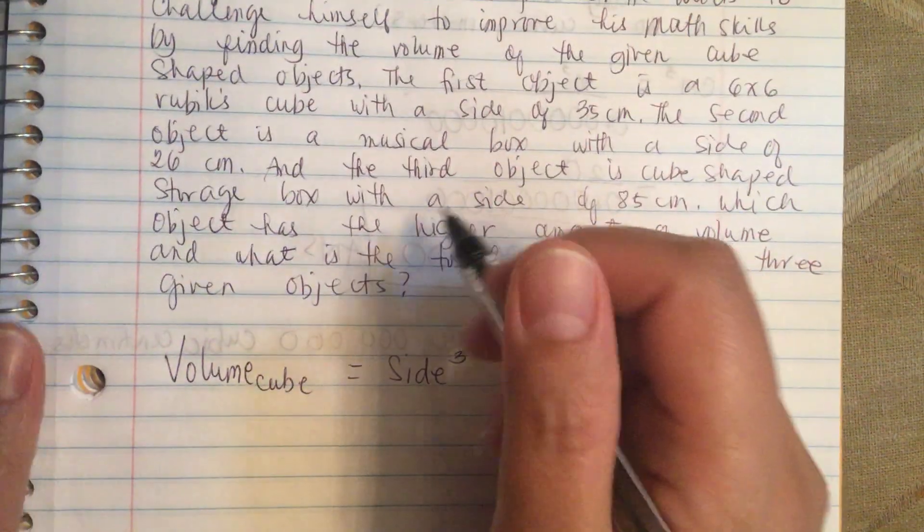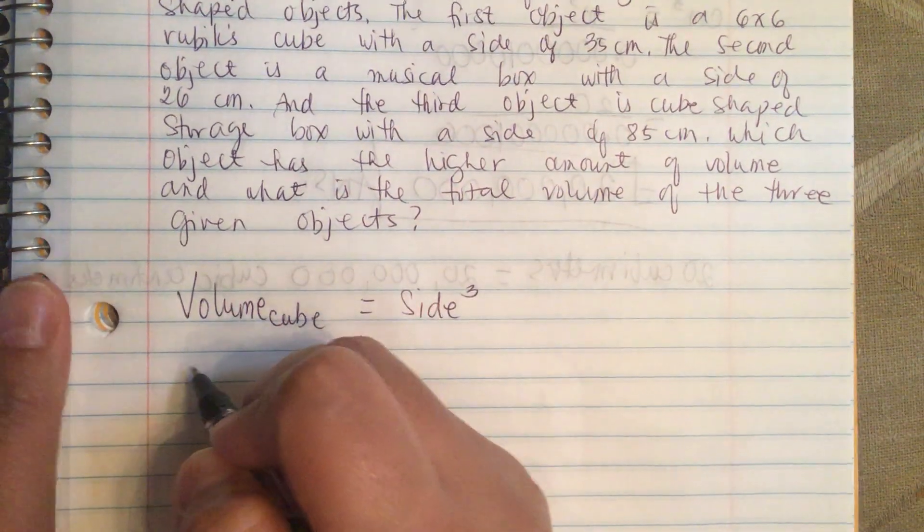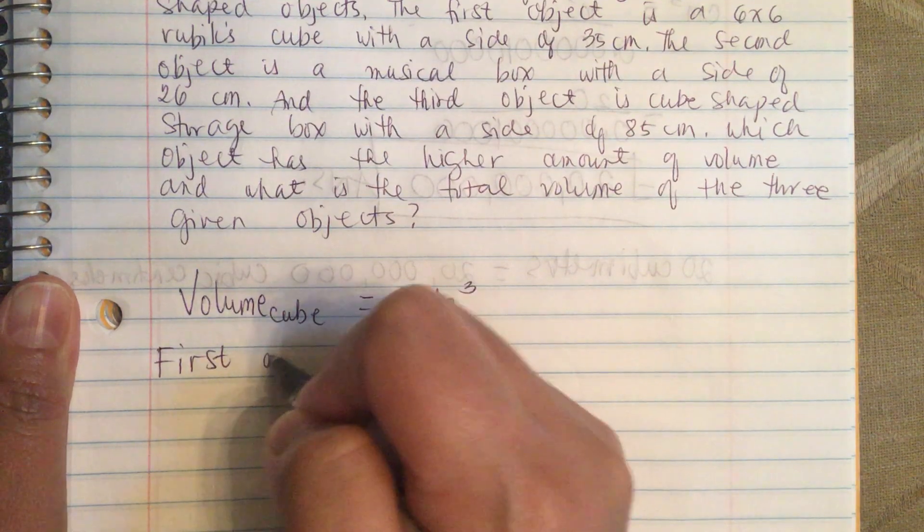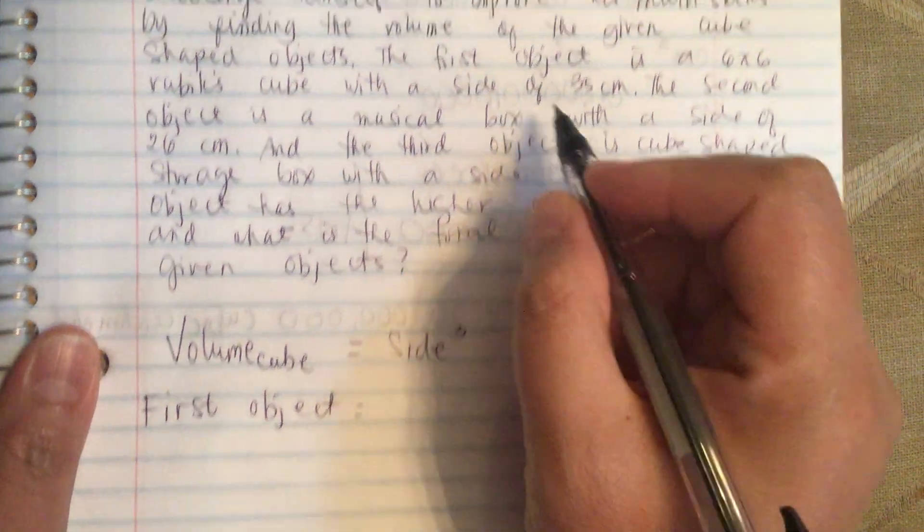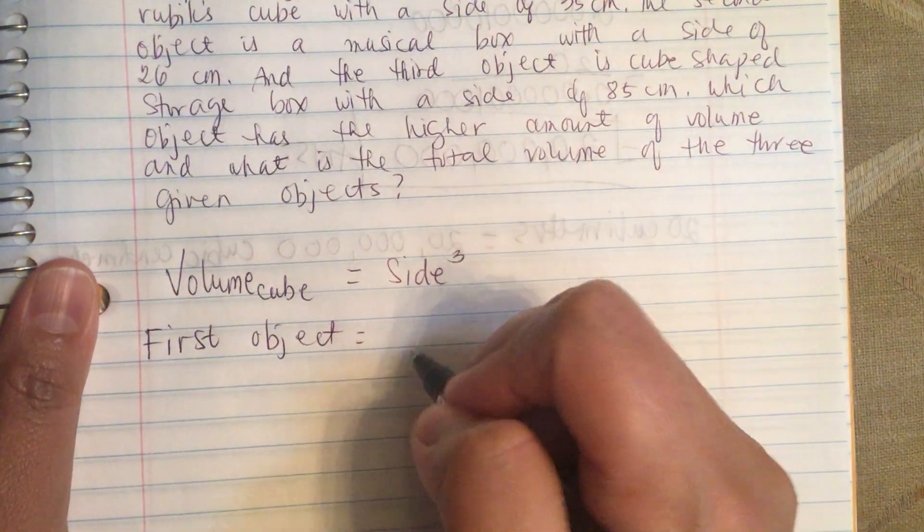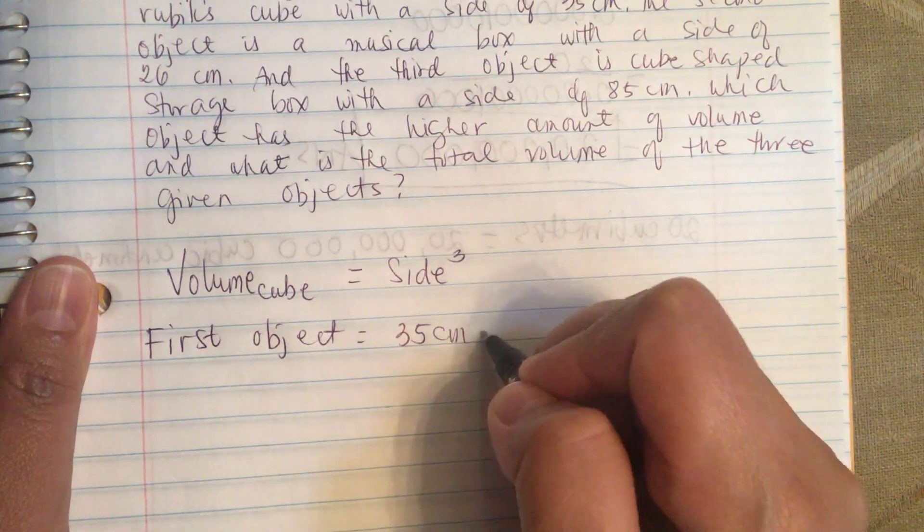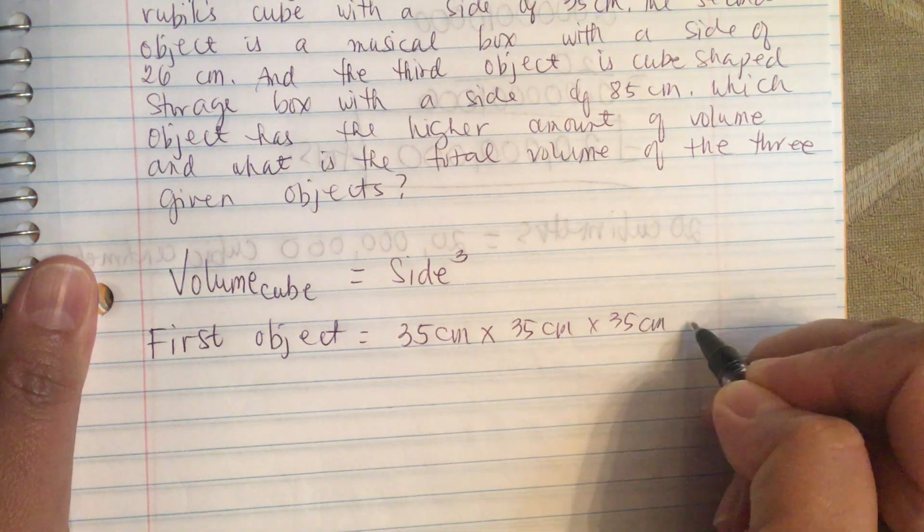So the first object has a side of 35 centimeter. So first object is equal to, it's 35 centimeters.